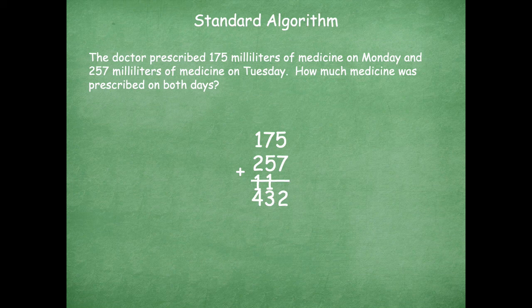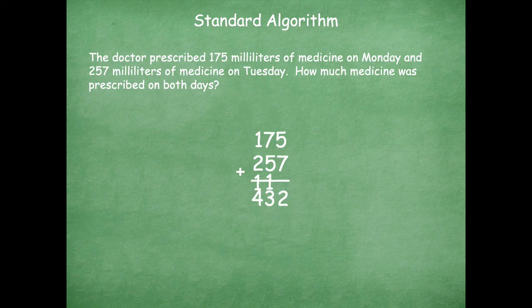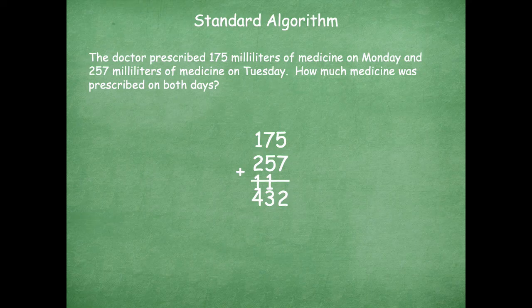Always, always, always, friends, don't forget to label the unit that you're measuring in. I go back to it. You might have 432 cats. You might have 432 dogs, 432 stickers, 432 cookies.